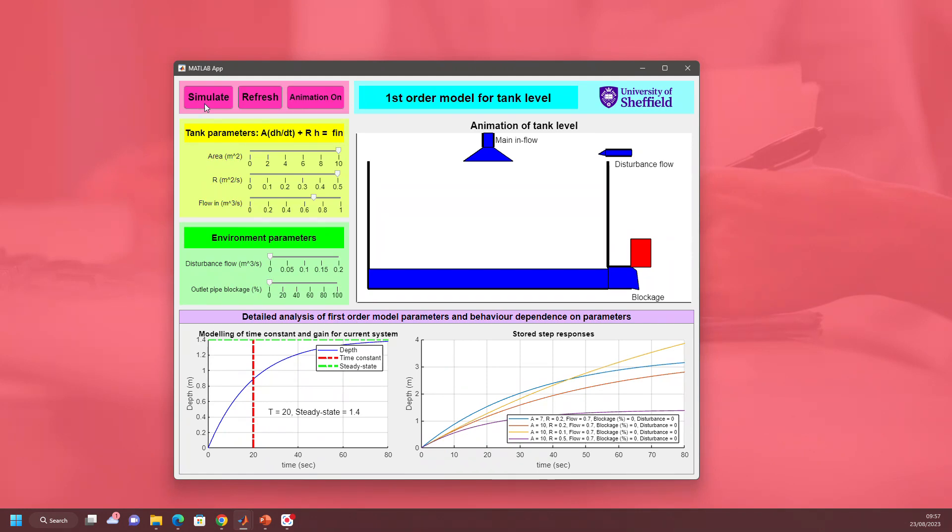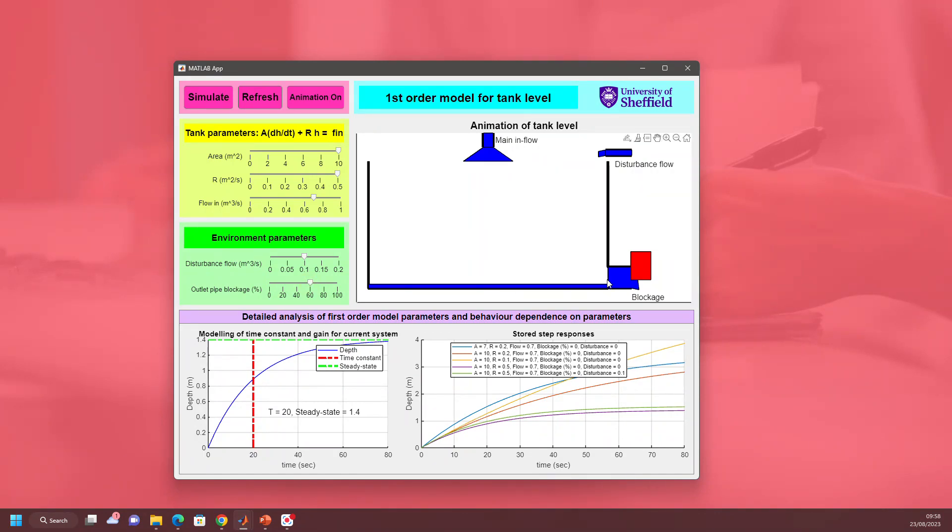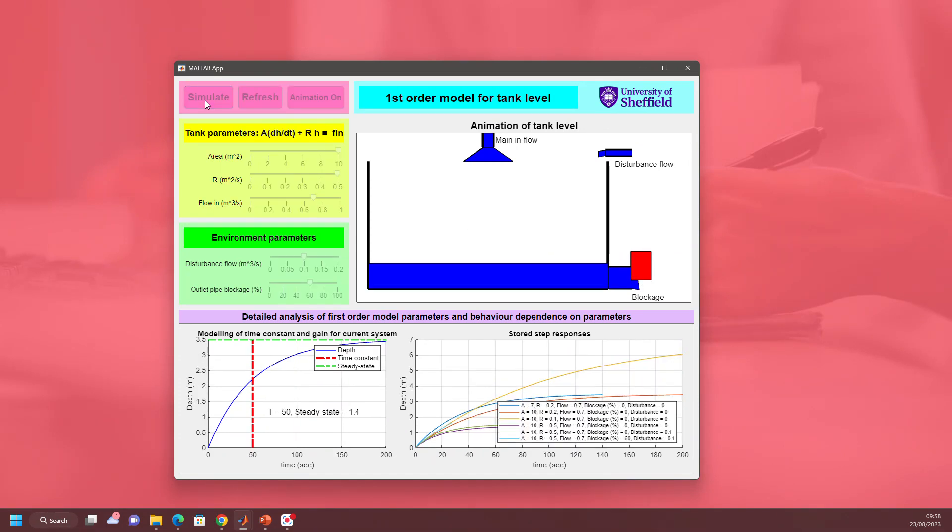I can also add disturbance flows. Let's make it 0.1 and see how that changes the behavior. The green and purple lines show you no disturbance versus with disturbance. Now what if I block the pipe? I'm going to do a 60% blockage. You can see this red rectangle has come down to represent the blockage. Perhaps unsurprisingly, the tank is filling to a deeper depth now.